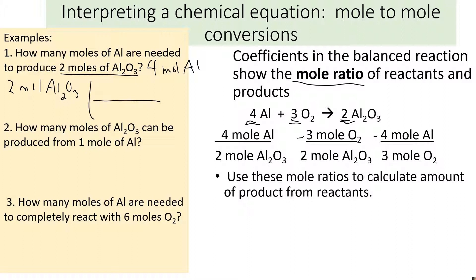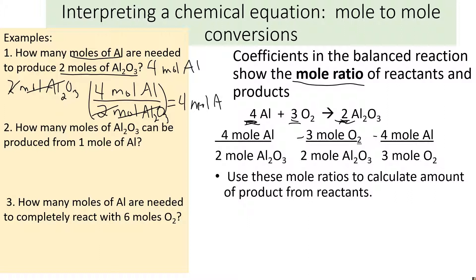Our conversion is going to be a mole ratio. We want moles of aluminum oxide on the bottom — that's our given, so it goes in the denominator — and in the numerator is our find, moles of aluminum. The numbers come straight from the balanced reaction: aluminum has a four, aluminum oxide has a two. The moles of aluminum oxide cancel, the twos also cancel, and we get four moles of Al — which we could also tell by inspection.